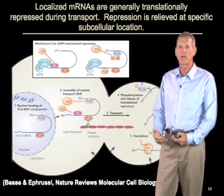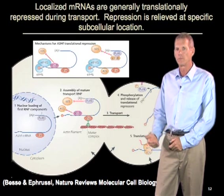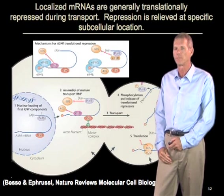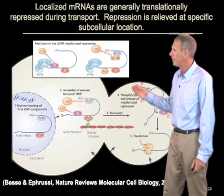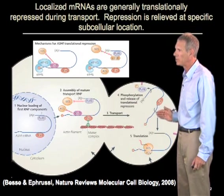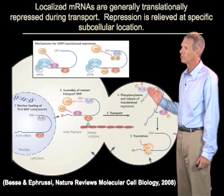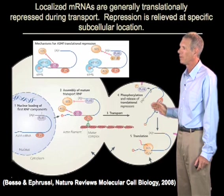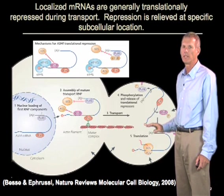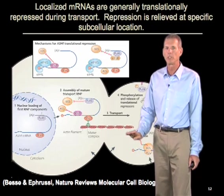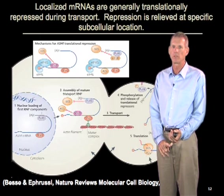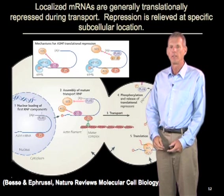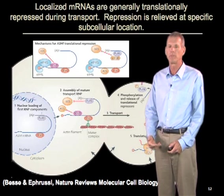If mRNAs are repressed during their transport, an important second principle is that their repression must be relieved once they reach their proper site. For example, in the case of the ASH1 mRNA, once the mRNA reaches the bud tip region, there are localized kinases present only in this region of the cell which phosphorylate these RNA binding proteins. They are released from the mRNA, and the mRNA can then enter translation. The two general principles to remember are: mRNAs are translationally repressed during transport, and once they reach their specific subcellular location, that repression needs to be relieved — in some cases by previously localized kinases.